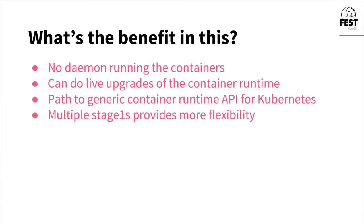This also means you can do live upgrades of your container runtime. If you want to upgrade the version of Rocket you're using, you can put the new binary on the host, then go one by one restarting your containers, and as they come back up they'll use the new version. This also provides a path to a generic container runtime API for Kubernetes — now that multiple runtimes are implemented, we can identify common parts and pull them into a more general abstract interface, making the next runtime much easier to implement. The stage ones also provide flexibility for special use cases, like running an application that needs to manage host mounts using the Fly stage one via a Kubernetes daemon set.